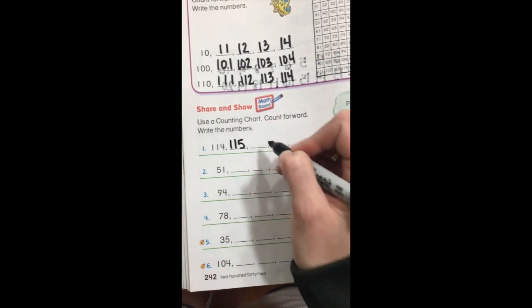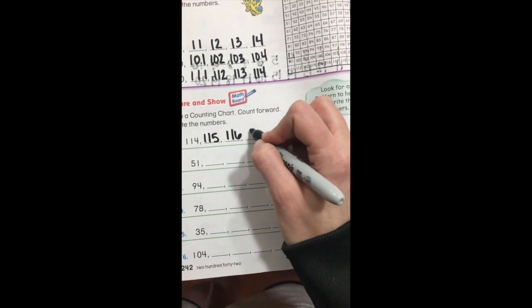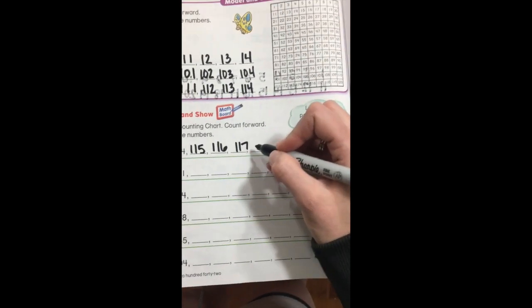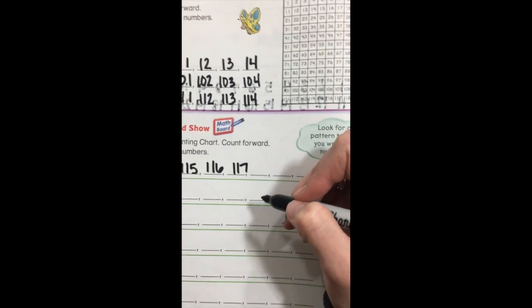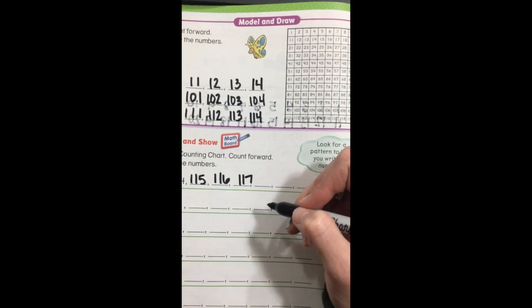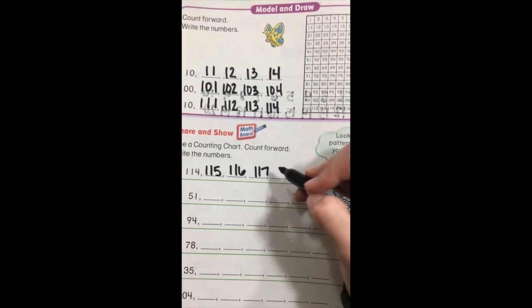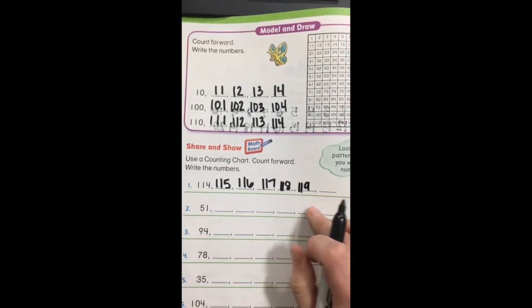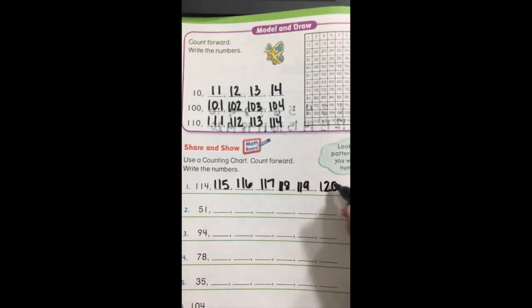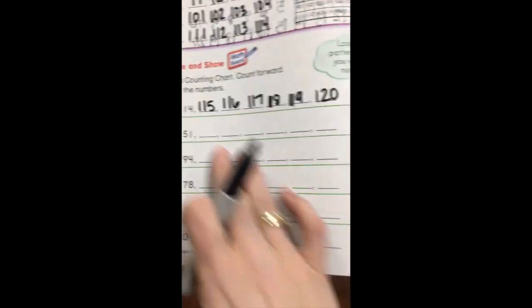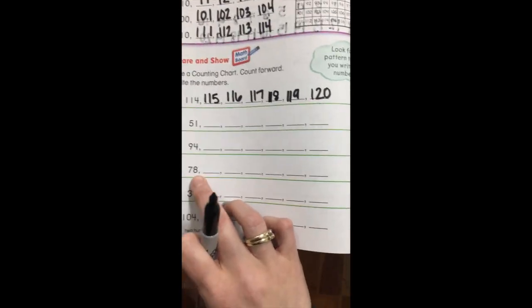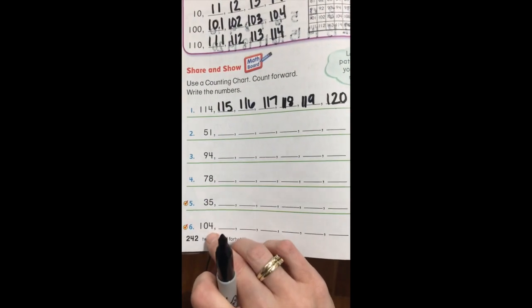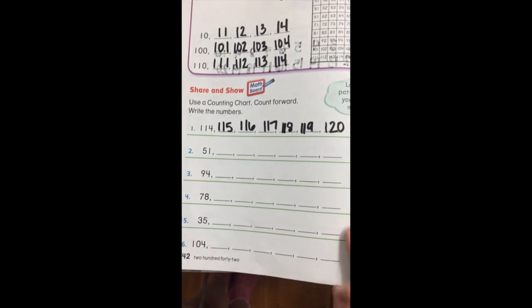Right, 115. Then 116, then 117. And remember, it's okay if you need to look at the chart because this is something new we just started, and you may have to look at the chart. These numbers are a little bit tricky. They are pretty high. We haven't really worked with these numbers yet. So 118, 119, and 120. Okay, then you're going to come down here and you're going to start with 51, and then you're going to count by ones until you get to the end of the sequence. And then you're going to go to 94, and then 78. Okay, and then 35, and then 104. So I want you guys to do these on your own. Okay, try them out.